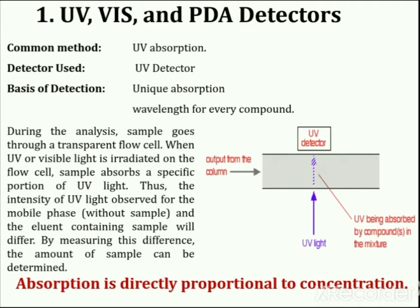First is the ultraviolet visible and PDA detector. The most common type of detectors used in HPLC analysis are ultraviolet visible detectors. Nowadays, ultraviolet visible detectors are combined with a photodiode array detector, which is the PDA detector. In combination, they provide good sensitivity for light absorbing compounds at the picogram level. These detectors are easy to operate and provide good stability.